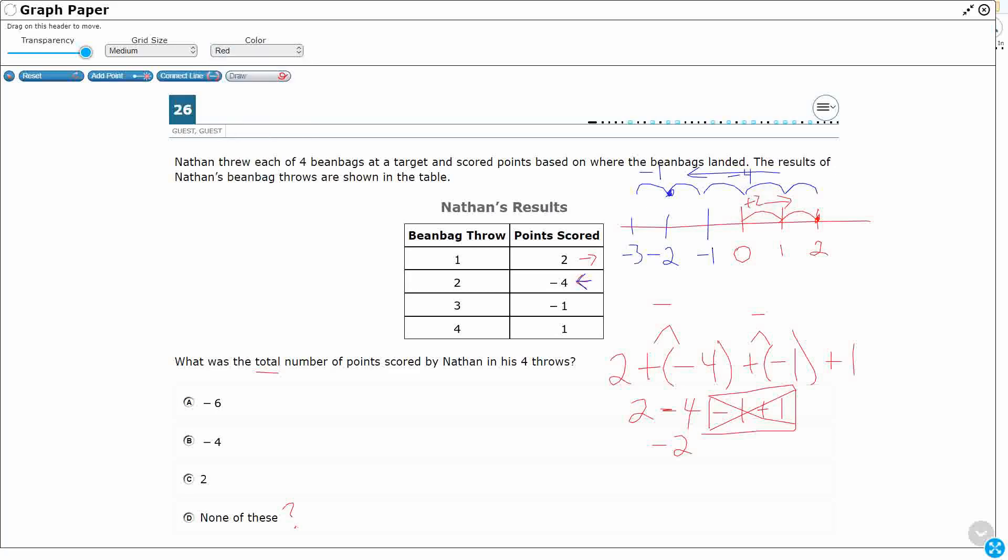But now I'm going to do a positive 1. So I'm going to do that down below here since I ended right here. I'm going to start here, and I'm just going to move to the right one. So that's my positive 1. So where did I end up? Well, I ended up with negative 2, which is what I got right here. So that seems right.